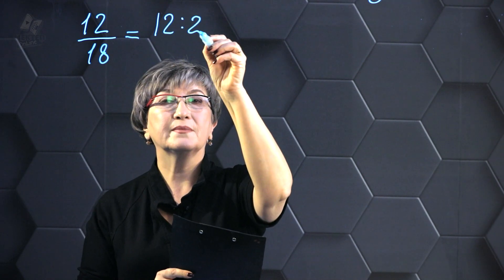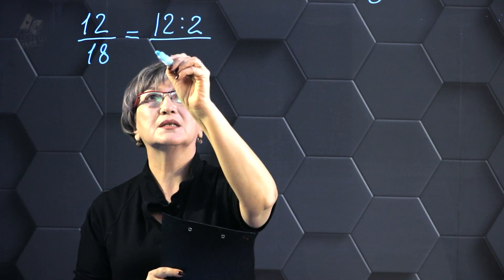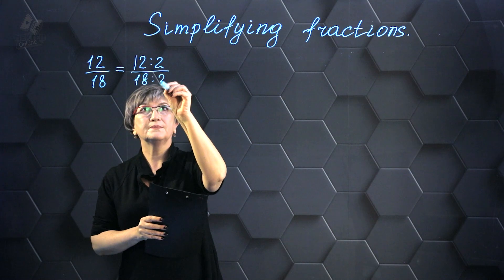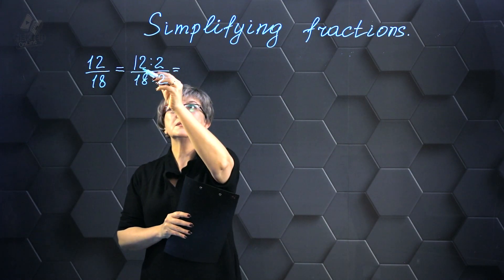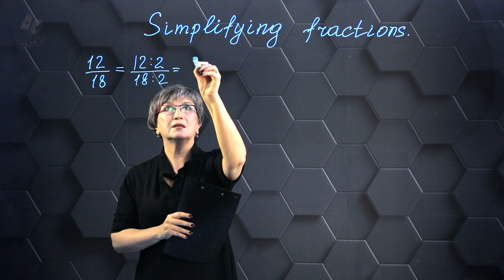Furthermore, I divide the given number 18 by 2 to calculate the final result accurately. Hence, we obtain 12 halves as 6 and 18 halves as 9.